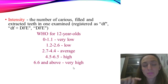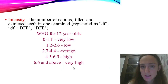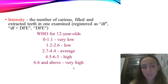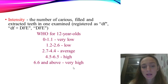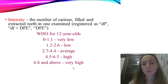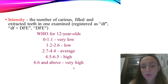For mixed dentition, you use lowercase 'dfe' for deciduous teeth and uppercase 'DFE' for permanent teeth. In mixed bite, you add lowercase dfe plus uppercase DFE together. For example, if lowercase df is five and there are two decays in permanent first molars, you add five plus two to get seven — that is the intensity. For permanent dentition only: if DFE shows two decays, three fillings, and one extracted tooth, you add two plus three plus one to get six.